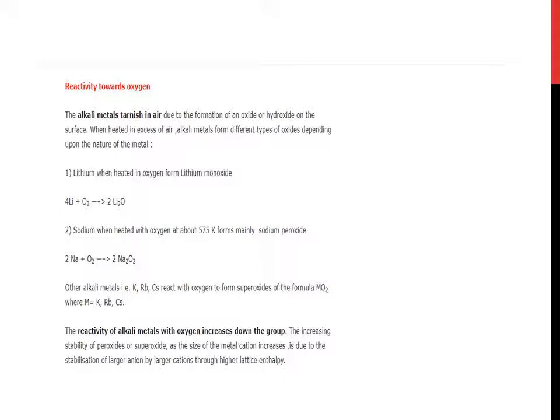Other alkali metals—potassium, rubidium, cesium—react with oxygen to form superoxides of the formula MO₂, where M stands for the metals of Group 1. The reactivity of alkali metals with oxygen increases down the group. The increasing stability of peroxides or superoxides as the size of the metal cation increases is due to the stabilization of larger anions by larger cations through higher lattice enthalpy.